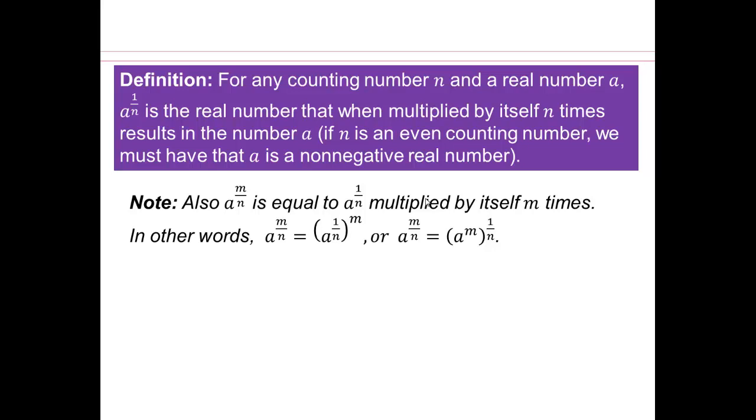So for example, 32 to the power 1 fifth. We're saying 32 to the power 1 fifth is that number so that when you take that number and multiply it by itself 5 times, you get 32. And we already saw that that number was 2 because 2 times 2 times 2 5 times gives you 32. So 32 to the power 1 fifth is defined as 2. So a is 32.